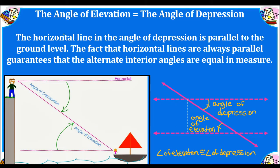The angle of elevation is congruent to the angle of depression. You've learned about parallel lines with a transversal and the angle relationships it creates. One of those is alternate interior angles — you're inside the parallel lines and on opposite sides of the transversal. So this angle of depression and this angle of elevation are congruent.